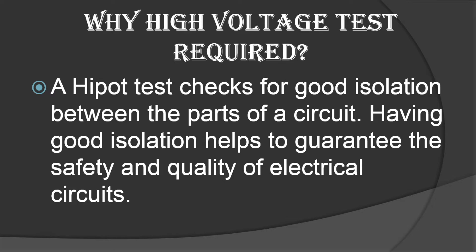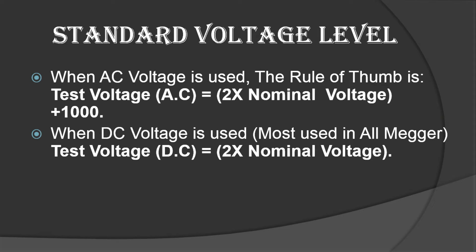What are the standard voltage levels when checking the insulation withstand capability? You have to apply voltage based on these rules. For AC voltage: AC voltage = 2 × nominal voltage + 1000 volts. The nominal voltage is the voltage specified for the cable. For DC voltage: DC voltage = 2 × nominal voltage — no extra 1000 volts is added for DC. This is the standard voltage used to check the withstand capability of the cable.